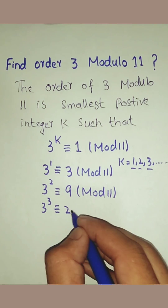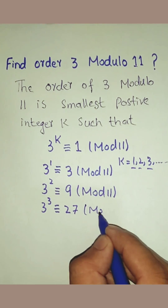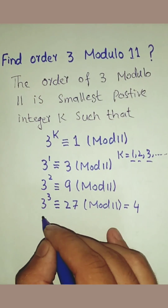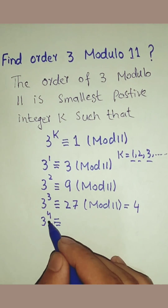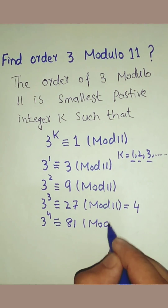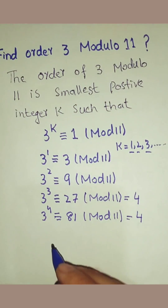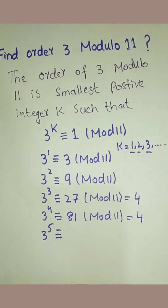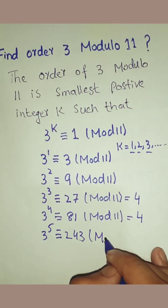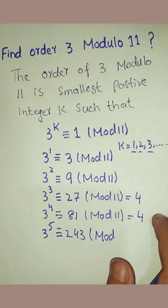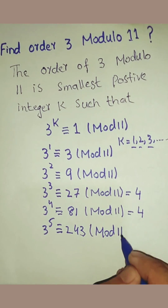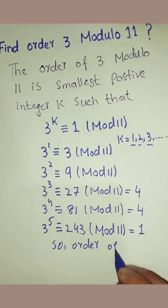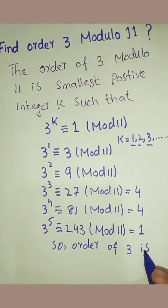Third, 3 to the power 3 is equal to 27 mod 11, which equals 4. Fourth, 3 to the power 4 is equal to 81 mod 11, which equals 4. Fifth, 3 to the power 5 is equal to 243 mod 11, which equals 1. So the order of 3 is 5.